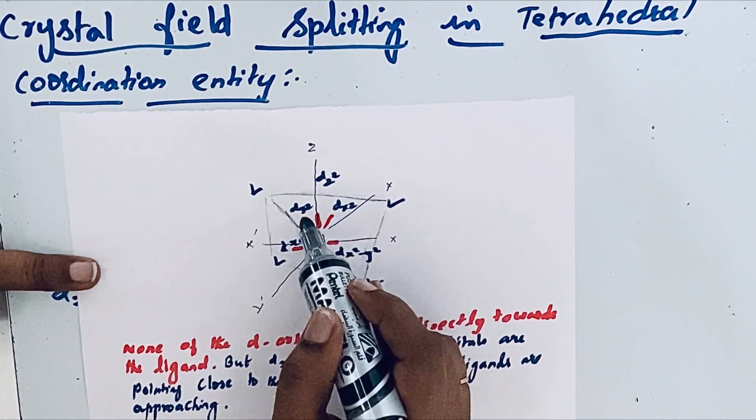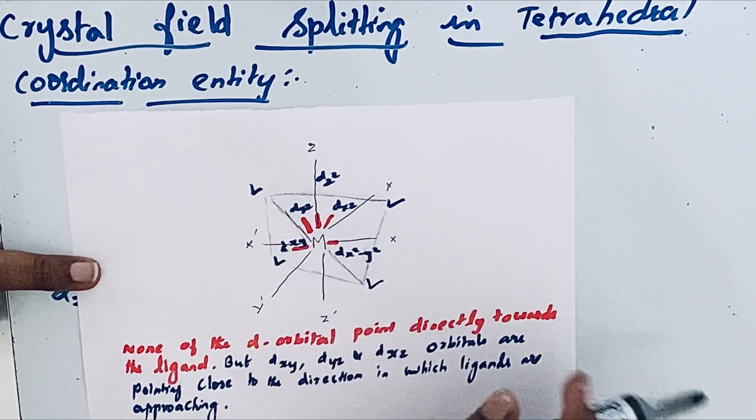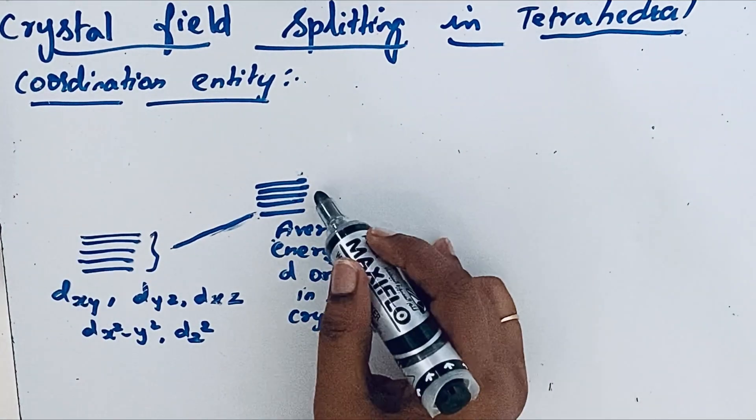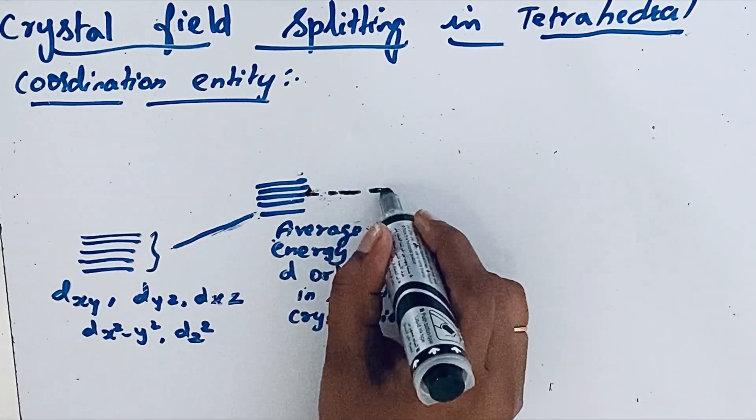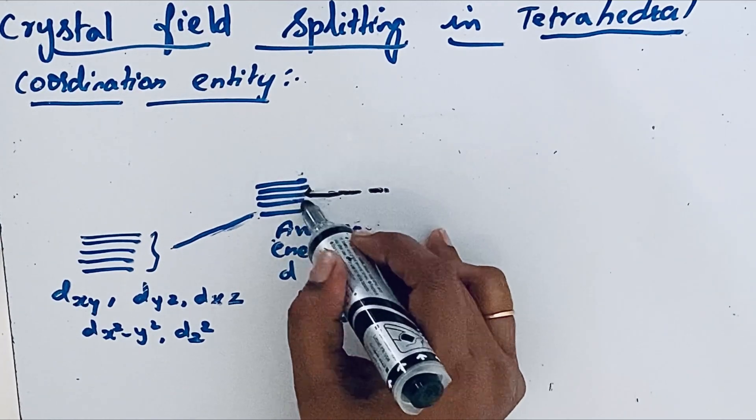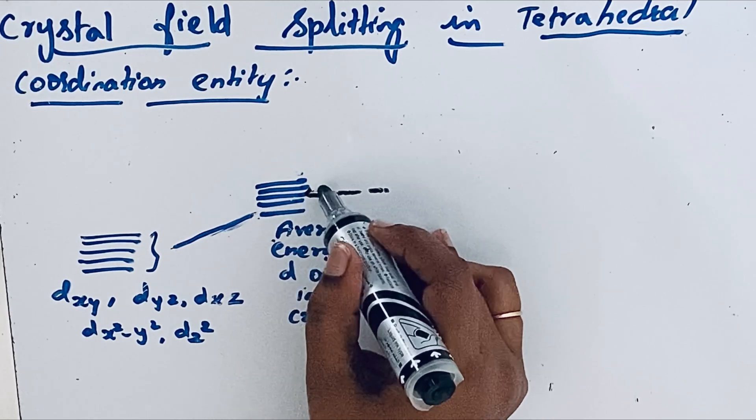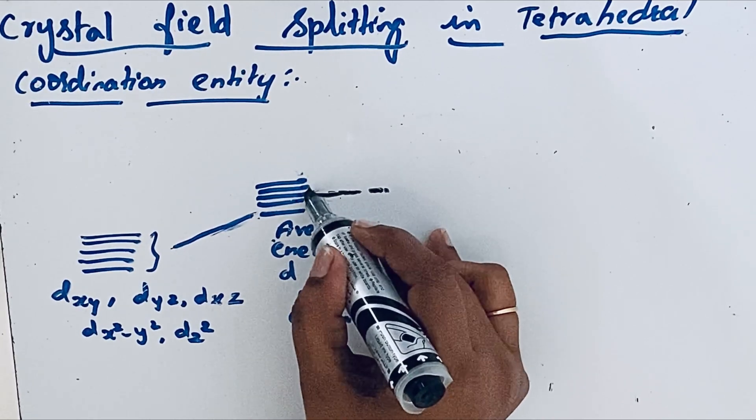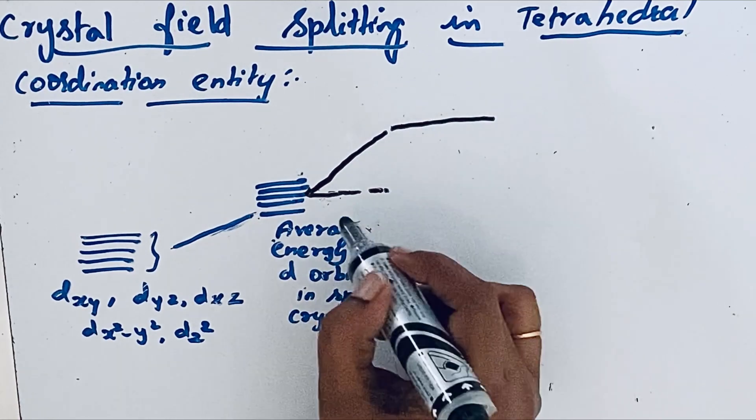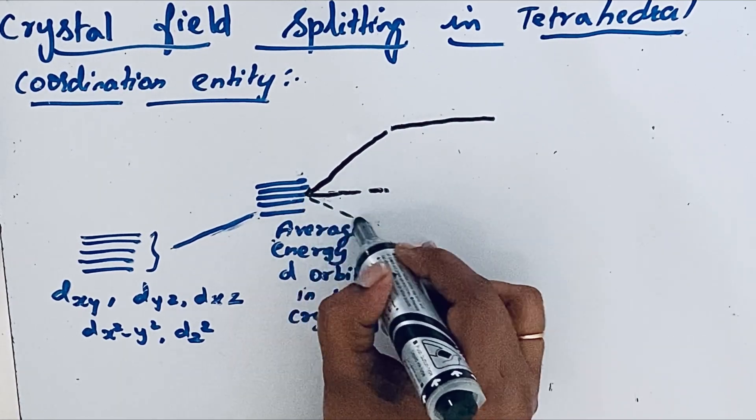So that is why now this is splitting into two sets of orbitals. This one is barycenter here, that energy is constant. So now these five d orbitals split into one high energy t2 orbitals and another one low energy e orbitals.